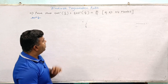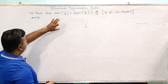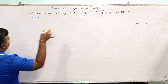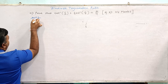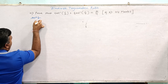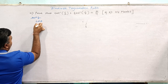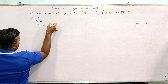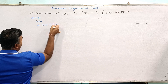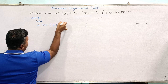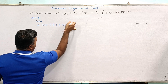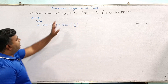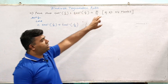Let's start the numerical. We will prove that LHS is equal to RHS. The given expression is tan inverse of 1/2 plus tan inverse of 1/3, and we need to show LHS equals RHS.